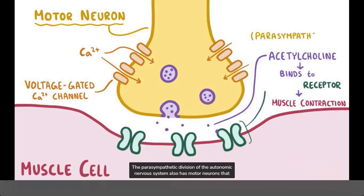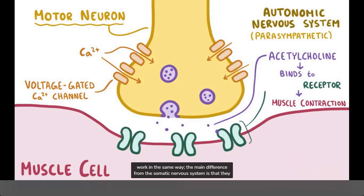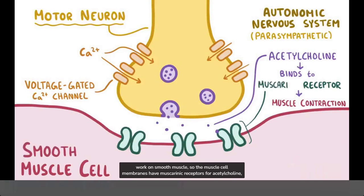The parasympathetic division of the autonomic nervous system also has motor neurons that work in the same way. The main difference from the somatic nervous system is that they work on smooth muscle, so the muscle cell membranes have muscarinic receptors for acetylcholine, and they're not called neuromuscular junctions.